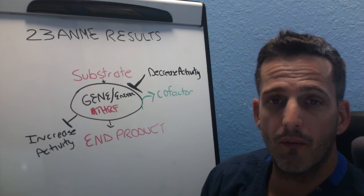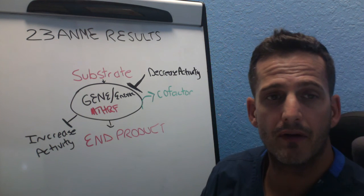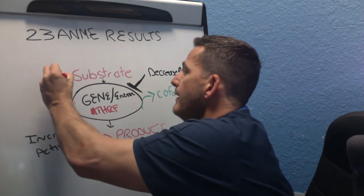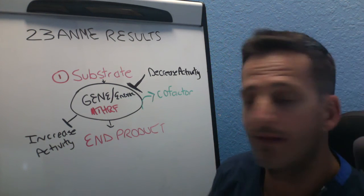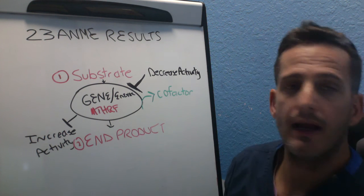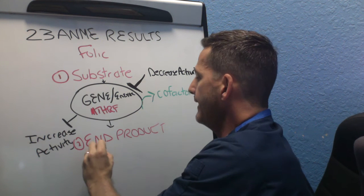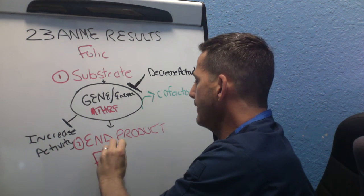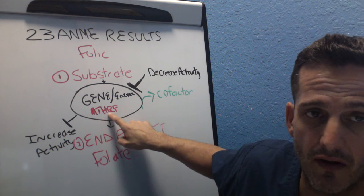So what I want to do is describe this to you and describe a couple of things that you need to think about. Number one is substrate, so what goes into the enzyme to make the end product. Typically we have folic acid up here at the top and then the end product tends to be folate. What happens is it goes through this MTHFR gene.